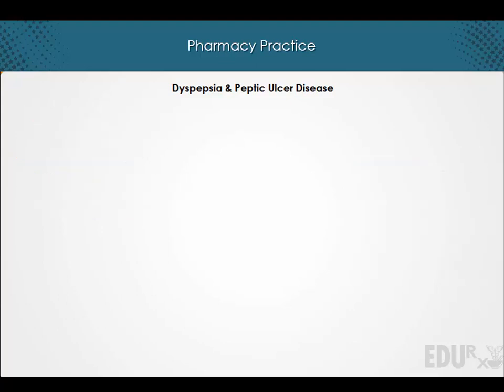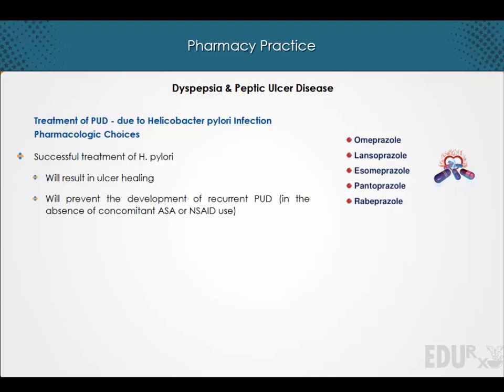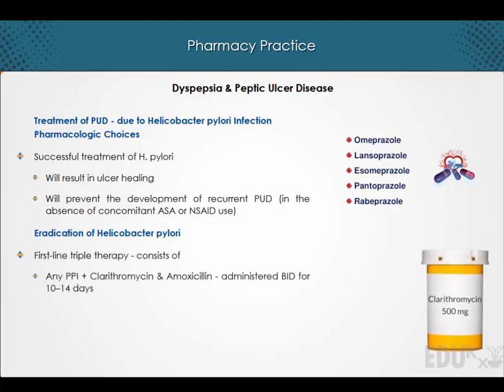Now let's discuss the treatment of peptic ulcer disease due to Helicobacter pylori infection. Successful treatment of H. pylori will result in ulcer healing and will prevent the development of recurrent peptic ulcer disease. First-line triple therapy consists of any proton pump inhibitor plus clarithromycin and amoxicillin, administered twice daily for 10 to 14 days.